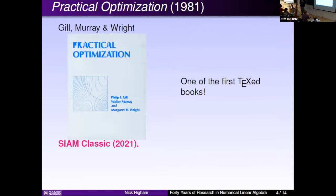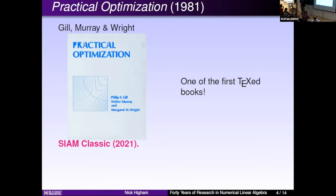One of the authors in the audience is Margaret Wright — Gill, Murray, and Wright. I did an undergraduate optimization course taught by Will McClewin in third year called Non-linear Optimization, and their book had just come out. I've included it here because although it's not numerical linear algebra, it has a strong numerical analysis flavor that fitted perfectly with my background. Even today, for topics like modified Cholesky factorization — which first appeared in book form in that book and still isn't in many books — that's still the place to go. It's been republished in the SIAM Classics series.